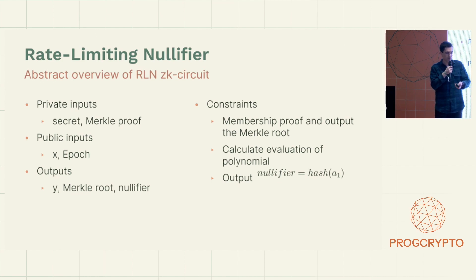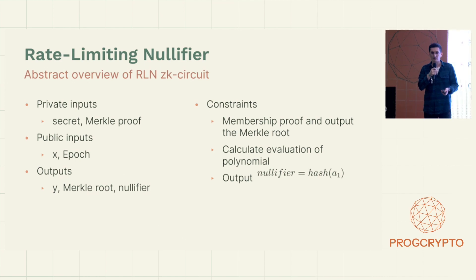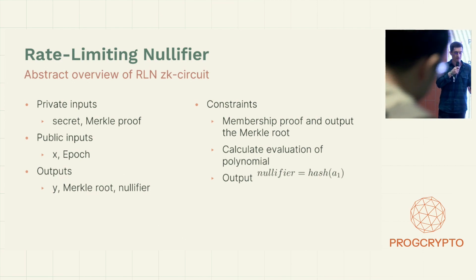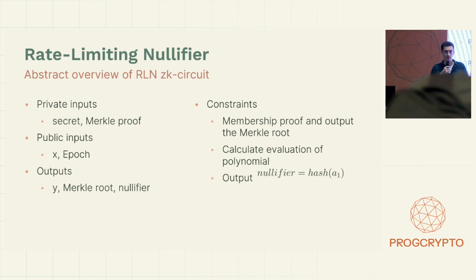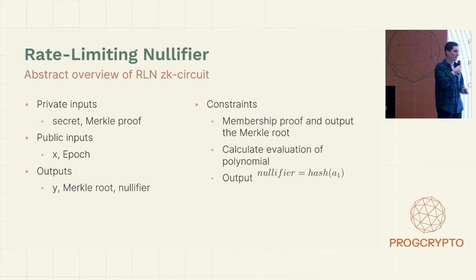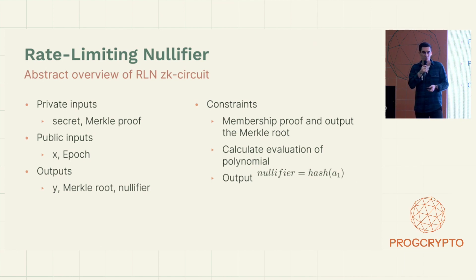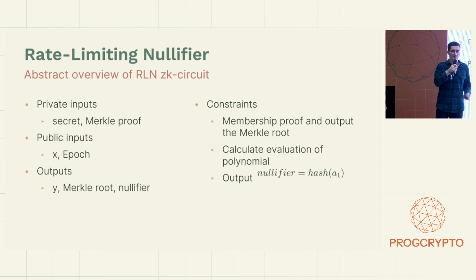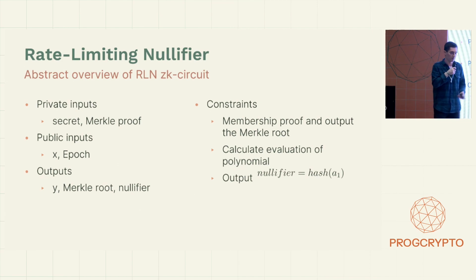We have such constraints: we first check the membership proof and output the Merkle root. We also calculate the evaluation of the polynomial for Shamir secret sharing scheme, and we output a nullifier. The nullifier equals the Poseidon hash of the A1 coefficient. We need the nullifier to recognize the spammer from the whole set of messages if spam occurs.